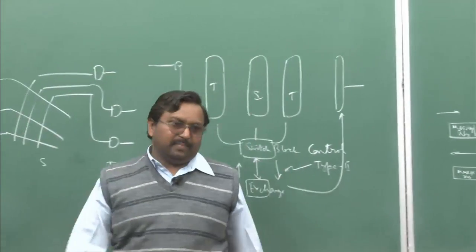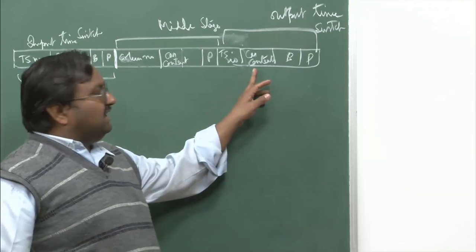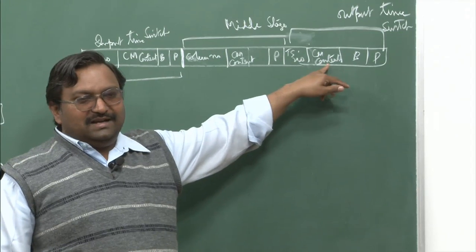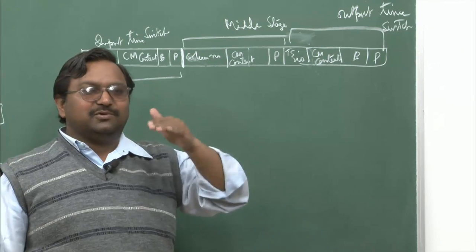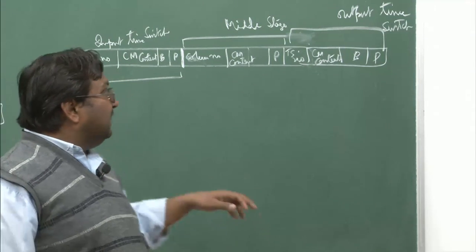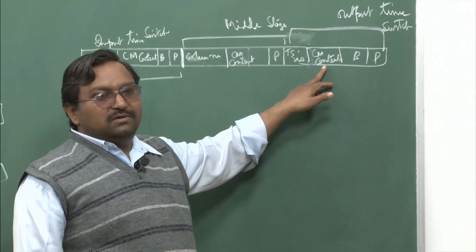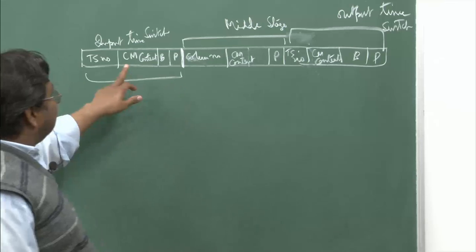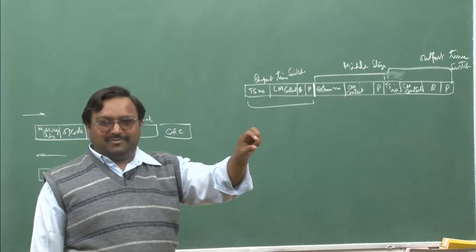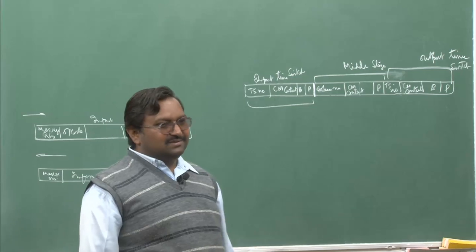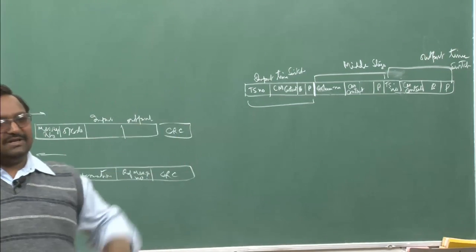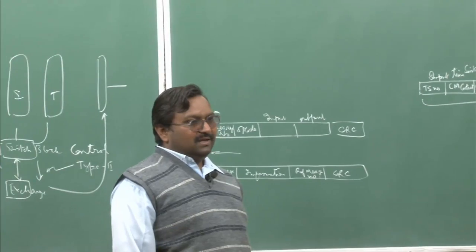The control memory content tells that for this time switch number, in whichever time slot you are writing, that is coming from the counter in the frame. This tells where you are going to read from. This information has to be inserted in control memory depending on the switching functionality — that is why it is called CM content. In that particular time slot, that is where you are writing.